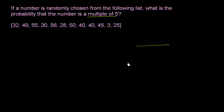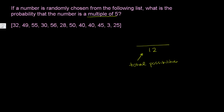So once again, we want to find the fraction of the total possibilities that meet our constraint, and our constraint is being a multiple of 5. How many total possibilities are there? That's just the total number of numbers we have to pick from: 1, 2, 3, 4, 5, 6, 7, 8, 9, 10, 11, 12 — so there are 12 possibilities. We have an equal chance of picking any one of these 12. Now, which of these 12 are a multiple of 5? We're just looking for numbers that in the ones place have a 5 or a 0. 55 is a multiple of 5.